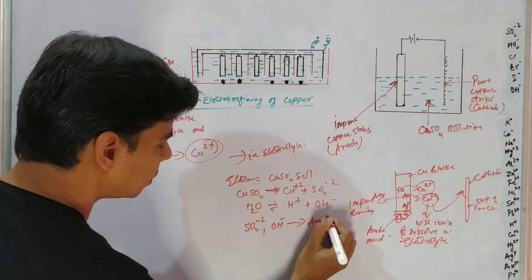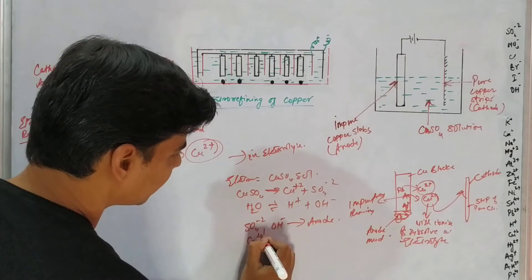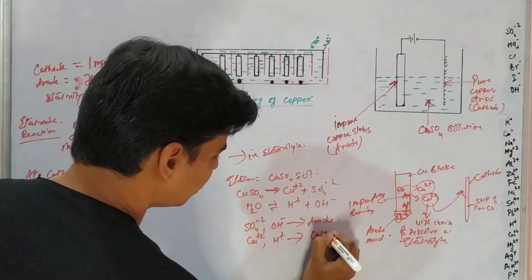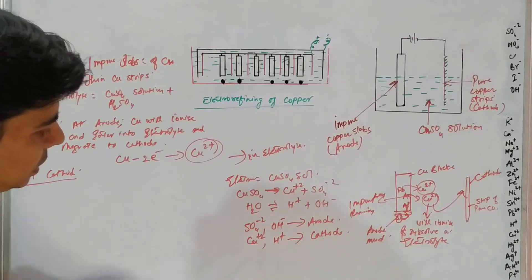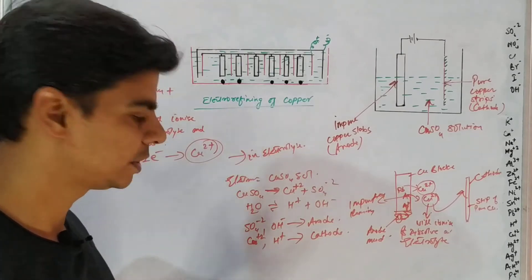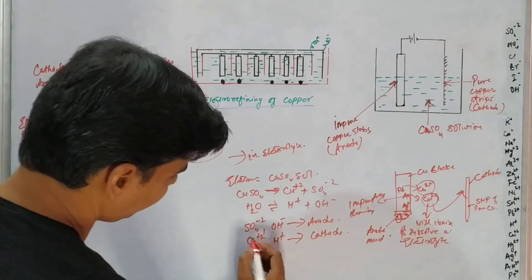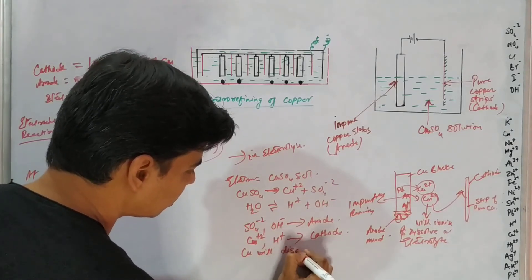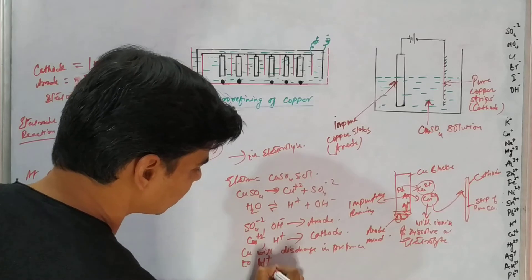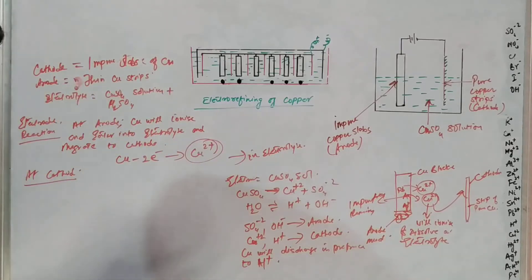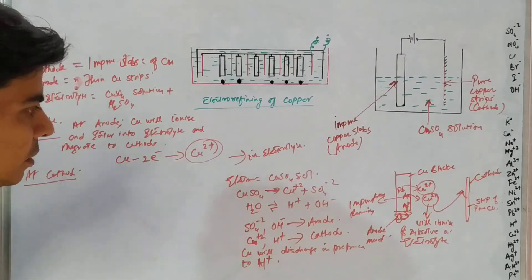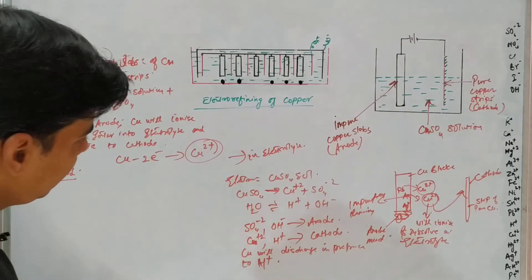The SO₄²⁻ and OH⁻ ions will migrate to the anode. Copper ions and hydrogen ions move to the cathode. Since copper is below hydrogen in the electrochemical series, copper will discharge at the cathode in preference to hydrogen ions, and copper ions will deposit at the cathode forming pure copper metal.